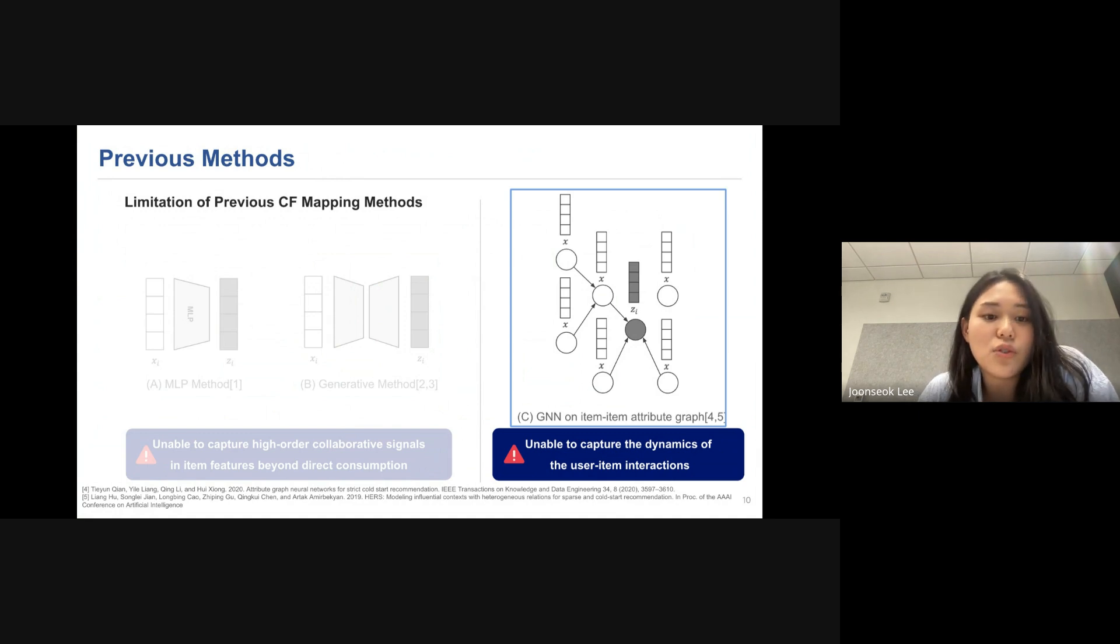However, these methods are unable to capture the dynamics of the user-item interactions because it uses content-based high order signals, not interaction-based higher order signals. Therefore, the recommendation relies on the assumption that if items share similar attributes, the user will have preference on that item. And this means it cannot capture the user's fine-grained taste.